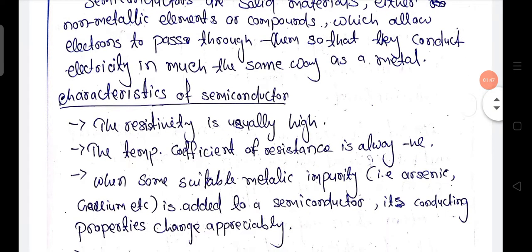Now the characteristics: the first characteristic is resistivity is usually high. The resistivity of the semiconductor is higher than the resistivity of the metal. So the conductivity of the semiconductor lies between the conductivity of the insulator and the conductivity of the metal.